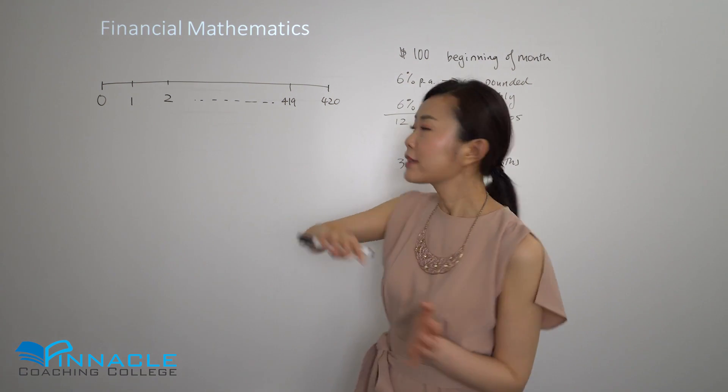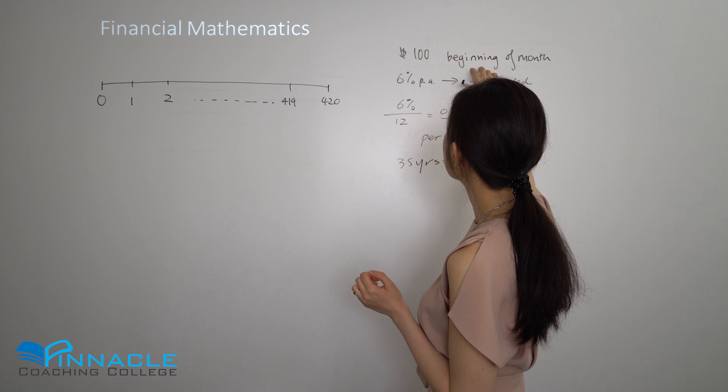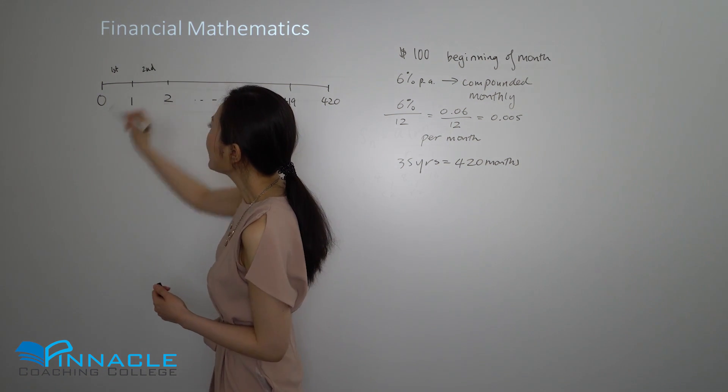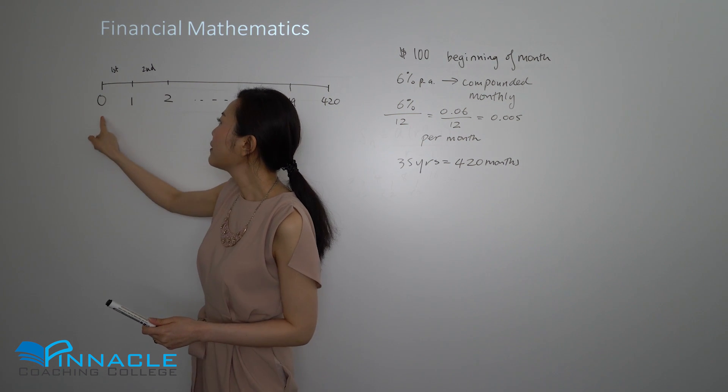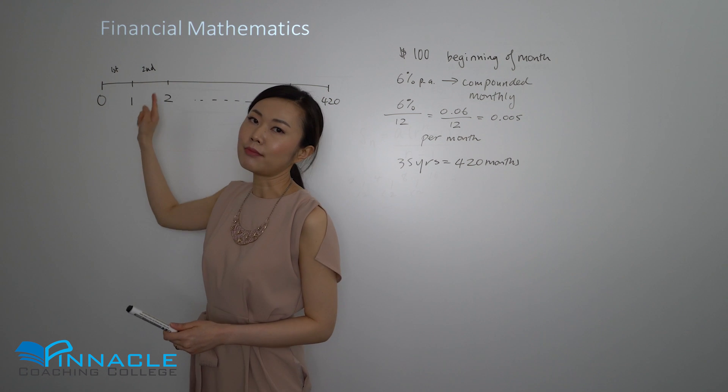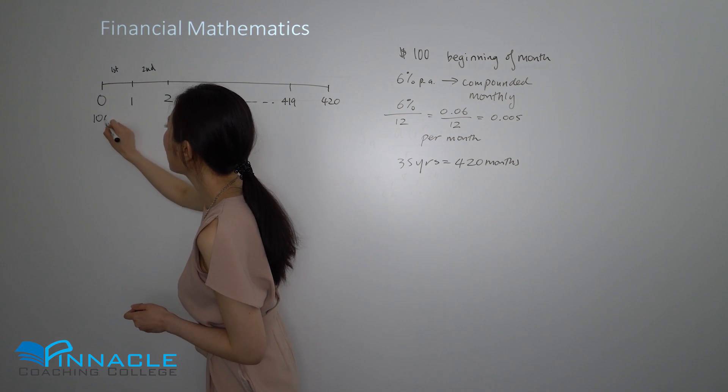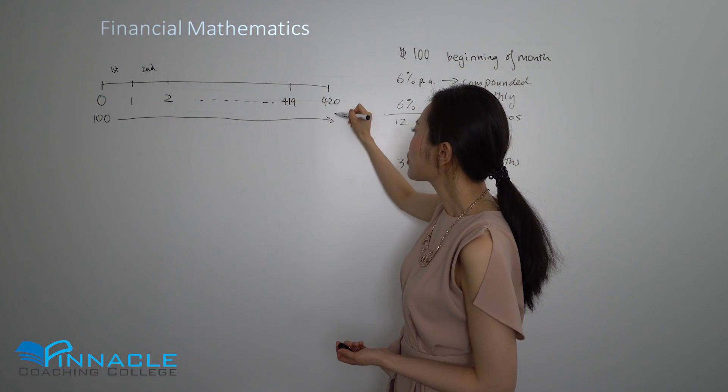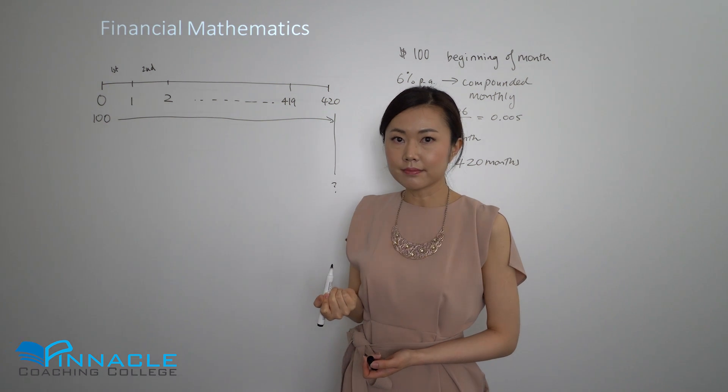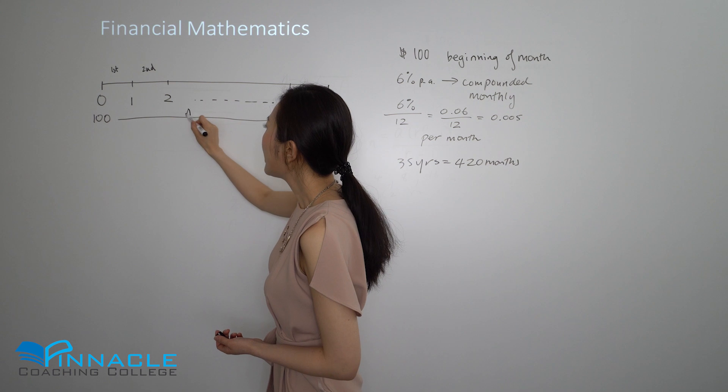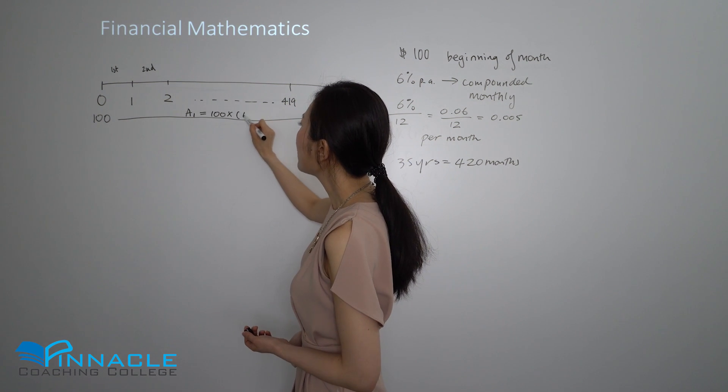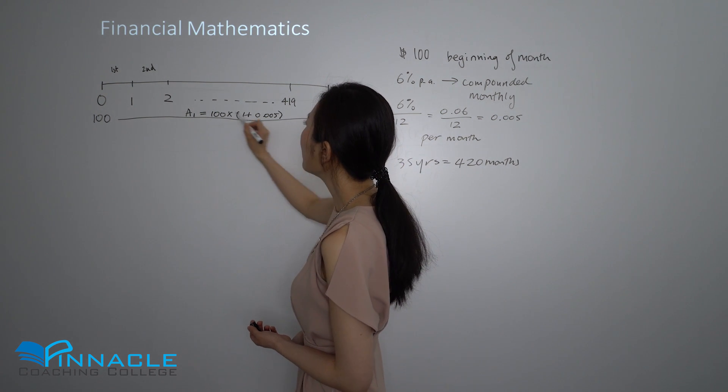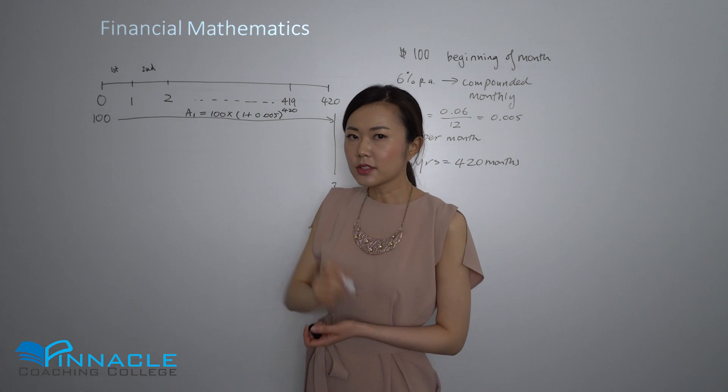From before when we read the question, we said there's going to be $100 contributed at the beginning of each month. How you read this number line is: this is the first month, second month. Zero would be the beginning of the first month, one would be the end of the first month or the beginning of the second month. Starting with the first payment, the first $100, it's going to be compounded for a full 420 months. We are trying to find the final value at this particular point. Let's call that A1, so A1 would be 100 times (1 plus r) to the power of 420.